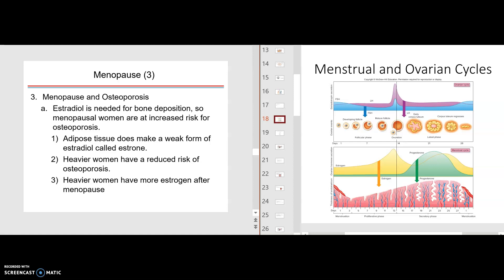Estradiol is needed for bone deposition. So menopausal women are at an increased risk for osteoporosis. Adipose tissue does make a weak form of estrogen called estrone. So very weak estrogen, not enough to really keep the tissues with an estrogenic effect. Heavier women have reduced risk of osteoporosis. One reason primarily is because they start out with a higher bone density to start with.